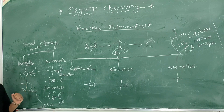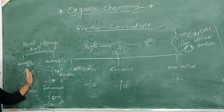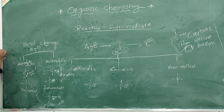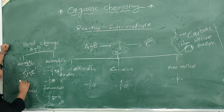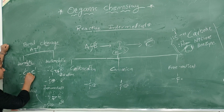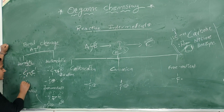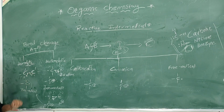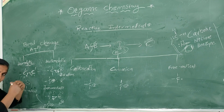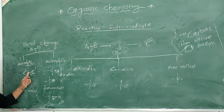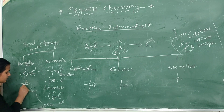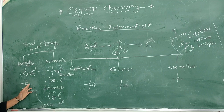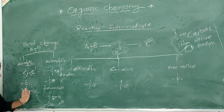Between two atoms of the same electronegativity, the electrons are equally distributed — so one electron goes to each atom. The single electron species formed is called a free radical. This is one of the important intermediates.